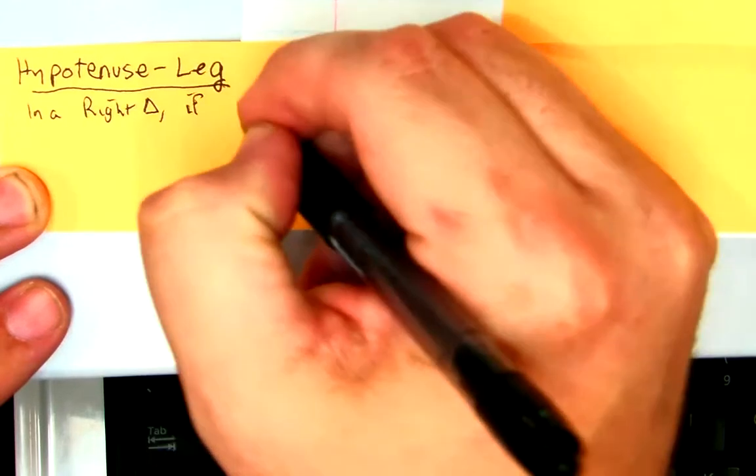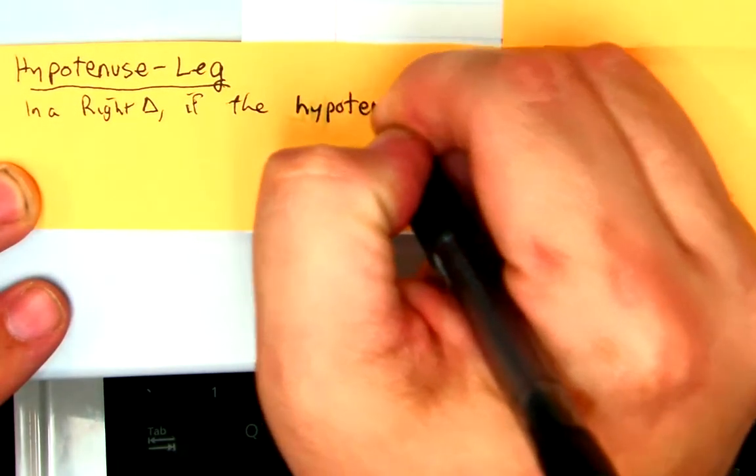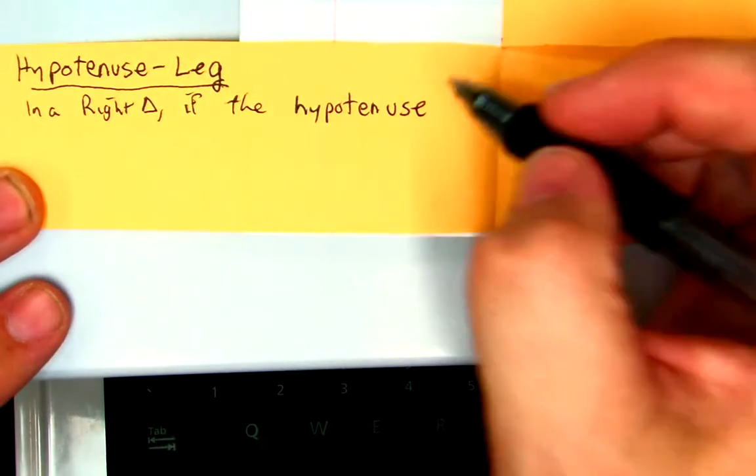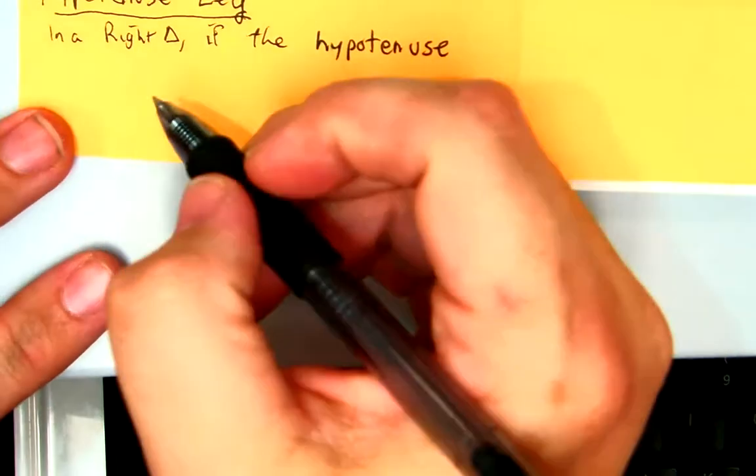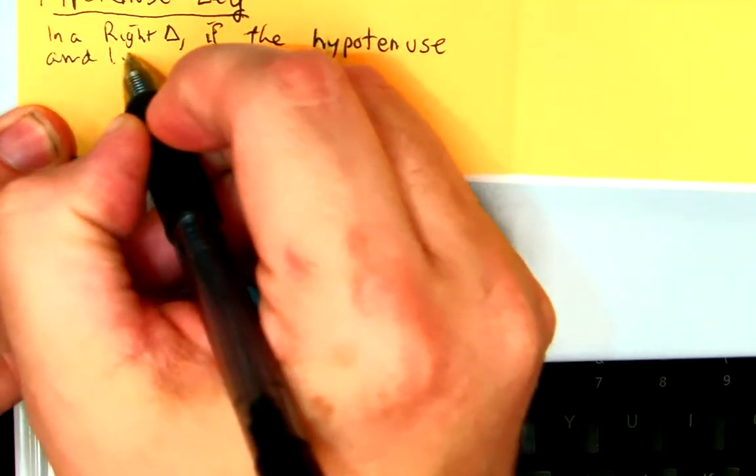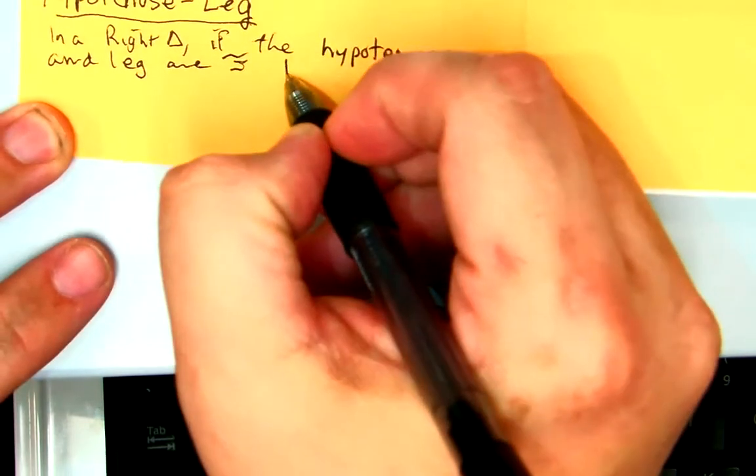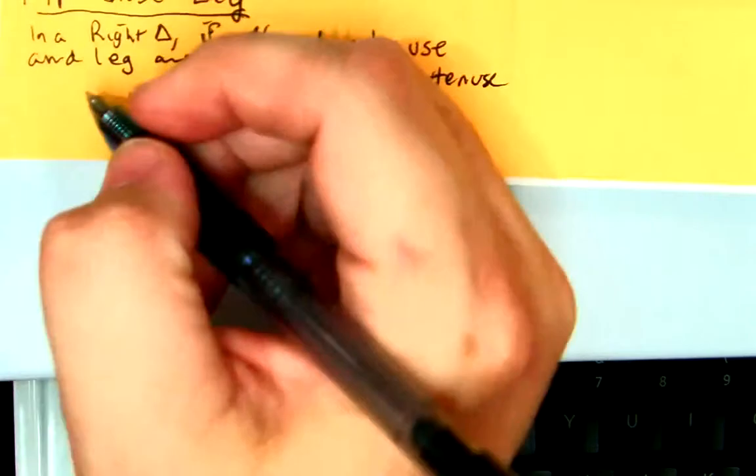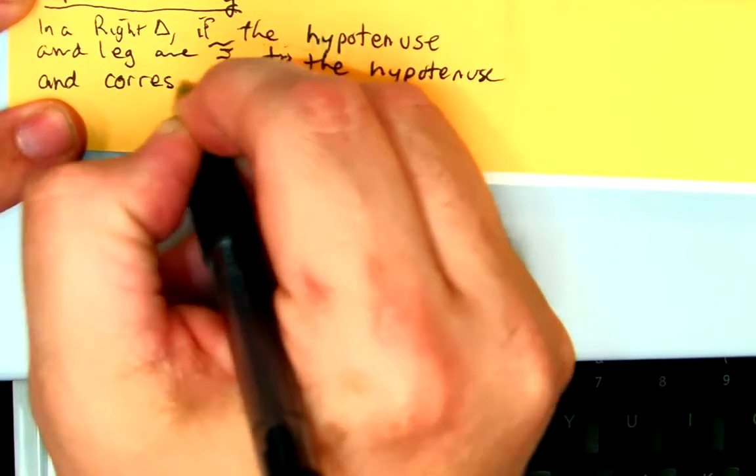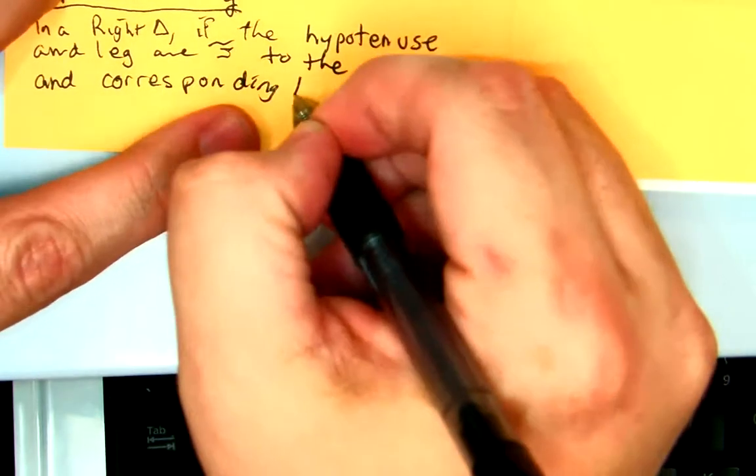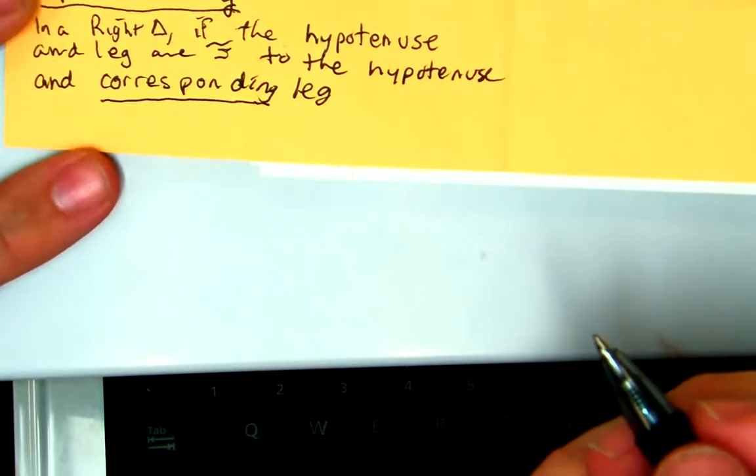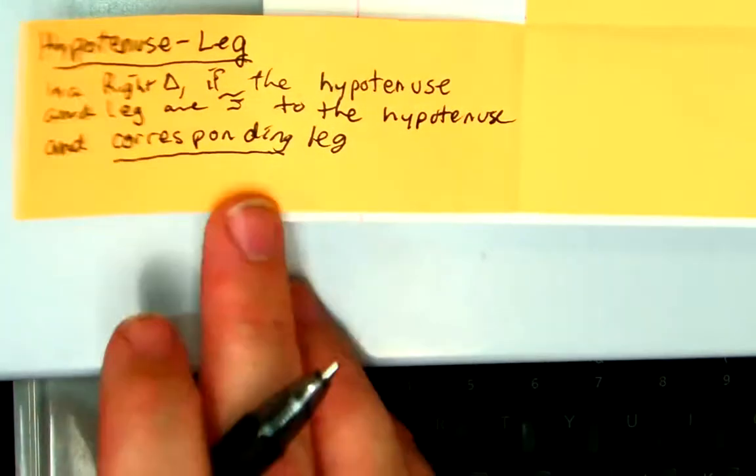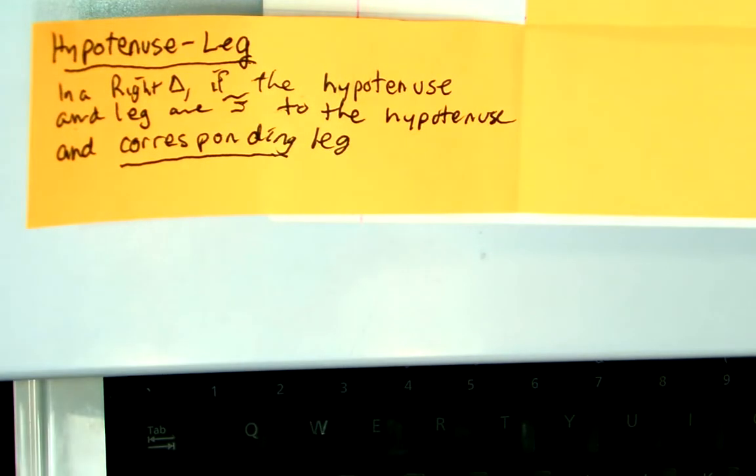So hypotenuse leg says that in a right triangle, if the hypotenuse and leg are congruent to the hypotenuse and corresponding leg, they have to be the corresponding leg. You can't just have one leg congruent to another leg. They have to be the same leg.